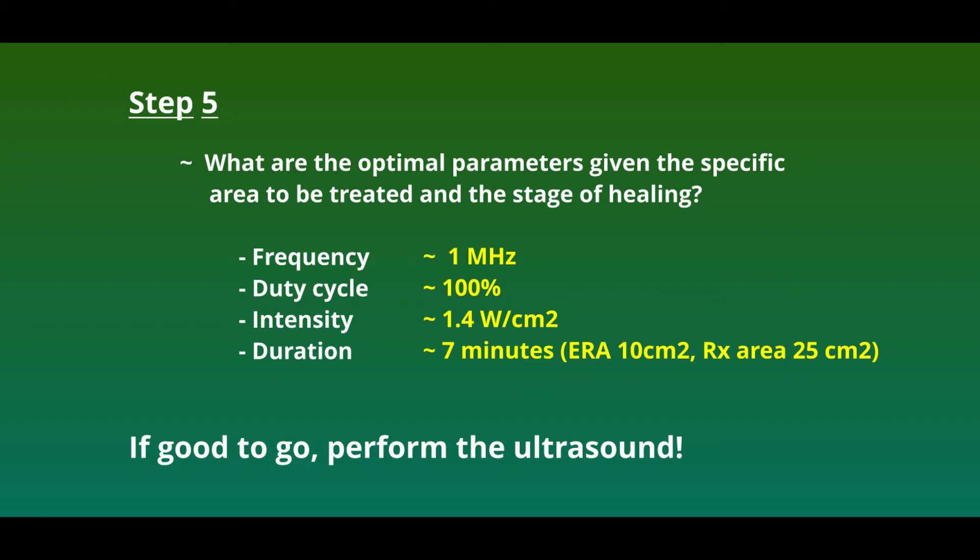I chose 1 MHz for frequency because we're targeting a deep tissue — our shoulder joint capsule. Based on our clinical goals, we've chosen to use thermal ultrasound. Therefore, I've chosen to do continuous ultrasound and start at 1.4 watts per centimeter squared for intensity. It's important to note that there's no one right choice for intensity; 1.4 watts per centimeter squared represents a starting point that may be adjusted during treatment. As a guideline, you can treat twice the ERA of the ultrasound head in a 5-minute period. Since I've estimated my treatment area at 25 square centimeters, I've chosen 7 minutes to start. It's important your duration is long enough to allow you to affect the target tissue appropriately.